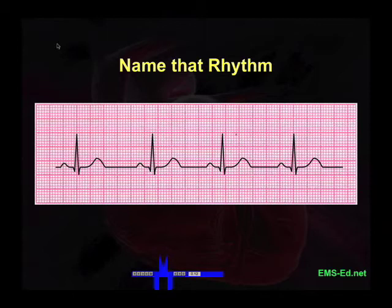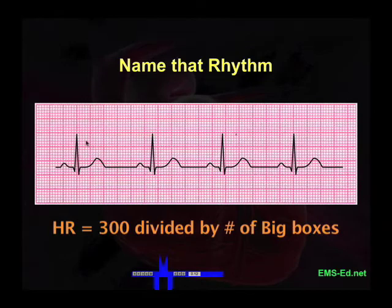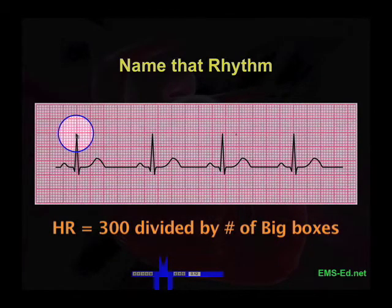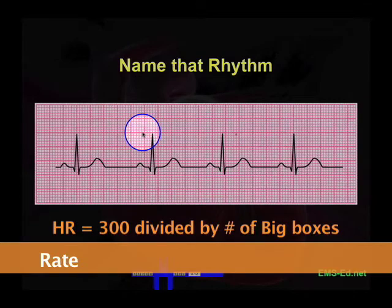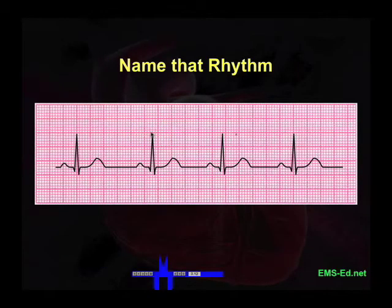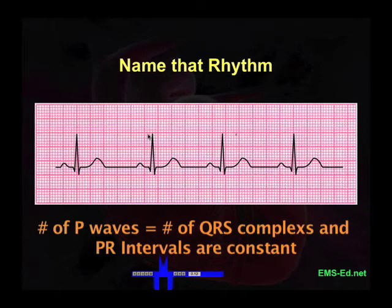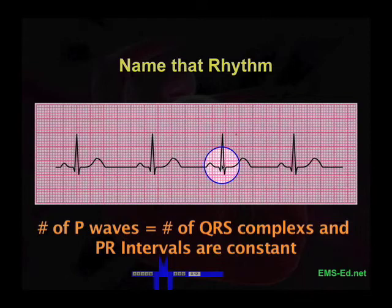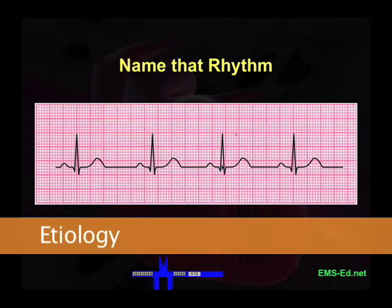This strip looks just like the last one, except it looks slower — the complexes are farther apart. Let's figure the rate. We'll find an R wave that's close to a dark line. Measuring: one big box, two, three, four, five. Five into 300 is 60, and this is slower than 60 — this would be 50. So between 50 and 60, let's call it a heart rate of about 54. It's sinus because there are P waves driving the beat, and the rate is less than 60. P wave, QRS. P wave, QRS. The P waves are clearly driving the QRS complex.